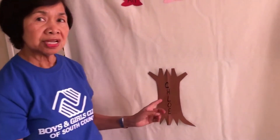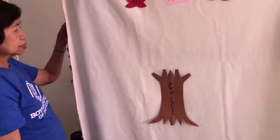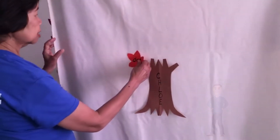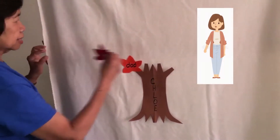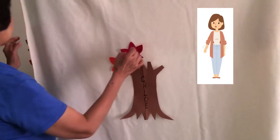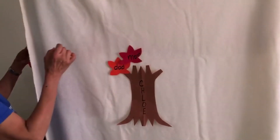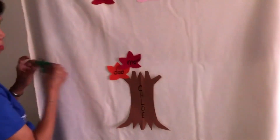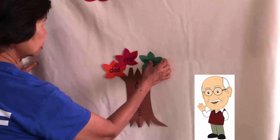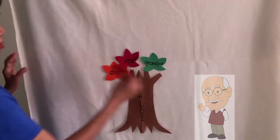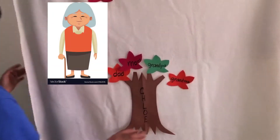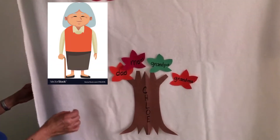In this family tree, you are going to put down the members of the family. For example, you have your dad, you have your mom, grandpa and grandma, and you also have your brother.